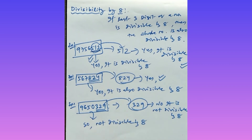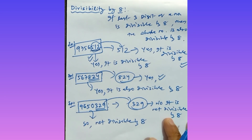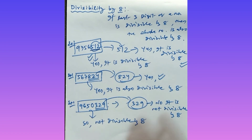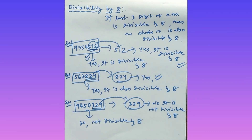So to summarize: to check whether a number is divisible by 8, simply look at the last three digits. If the last three digits are divisible by 8, then the whole number is also divisible by 8. That's how you solve it. Thank you very much, students.